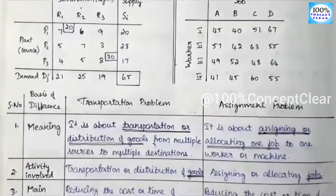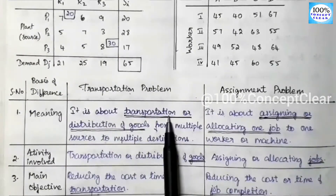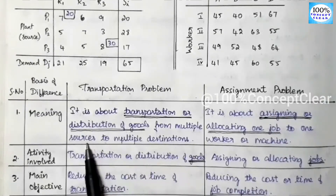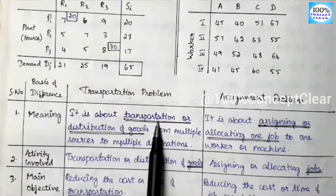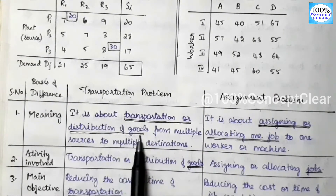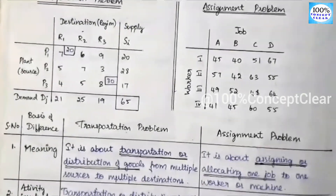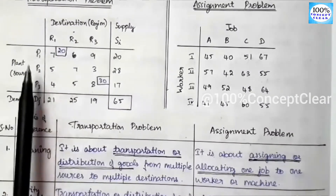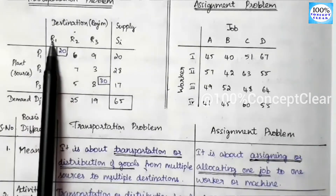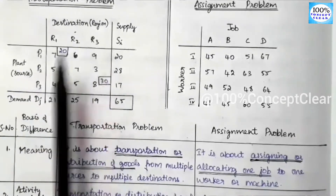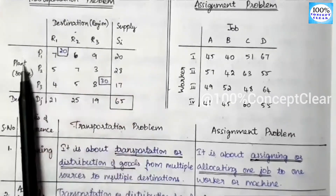So, what is the meaning of transportation problem? The transportation problem is about distributing goods from multiple sources to multiple destinations. For example, there are three manufacturing plants — these are the multiple sources. In the multiple destinations, we produce goods and transport them. That is the transportation problem.